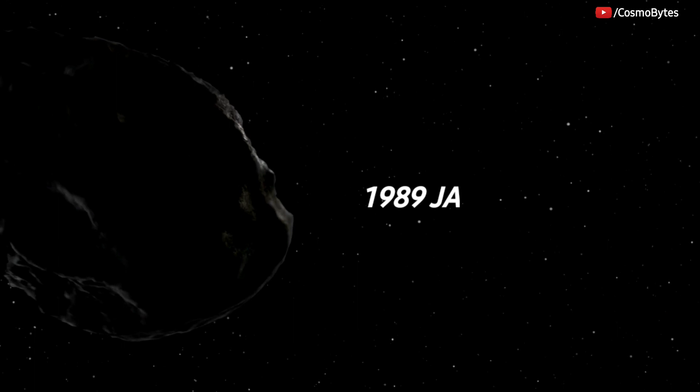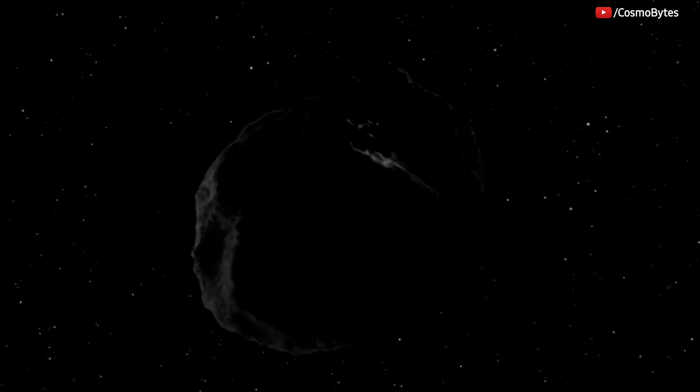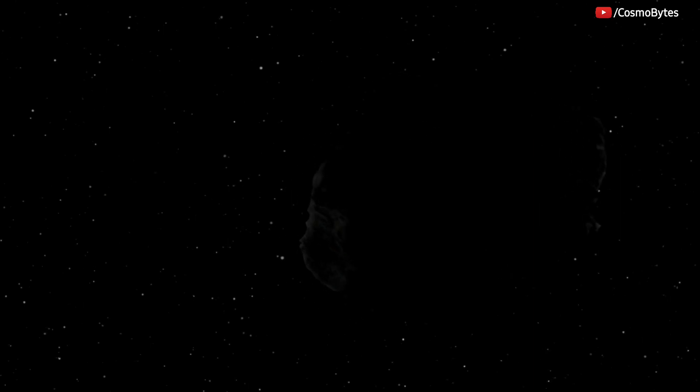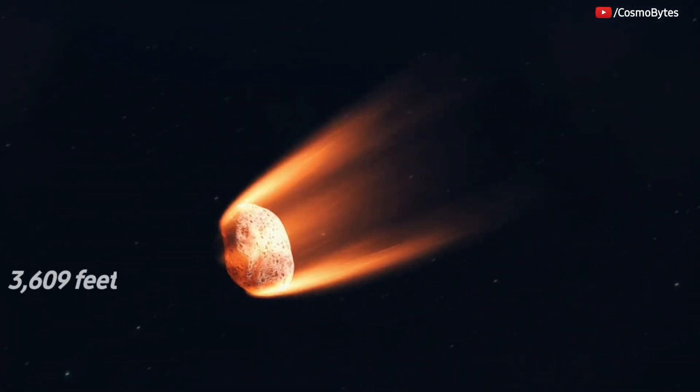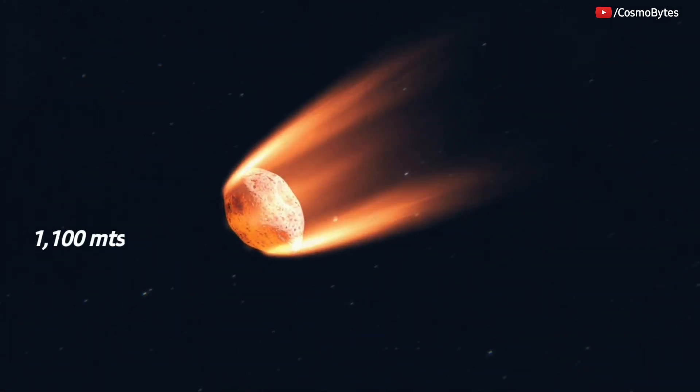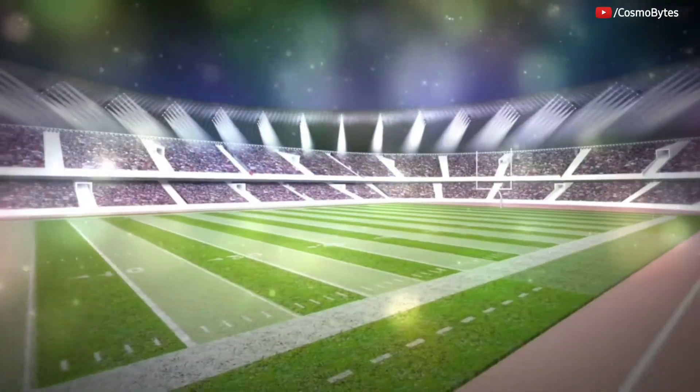Asteroid 1989 JA is about 1.1 kilometers in diameter, making it larger than 99% of asteroids. It has an estimated diameter of 3,609 feet, 1,100 meters, or about 10 American football fields laid end-to-end.